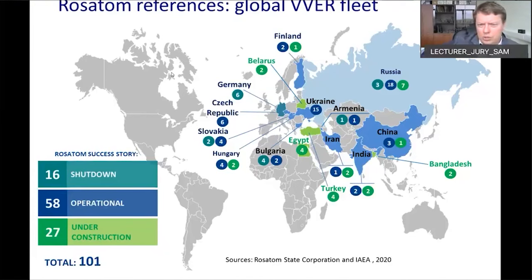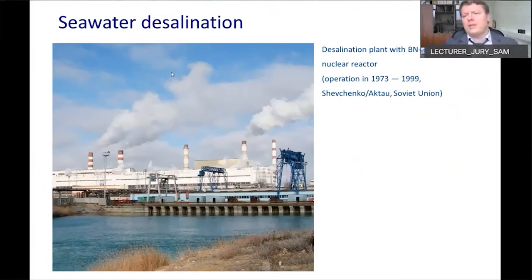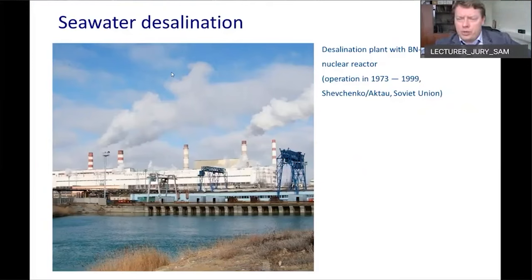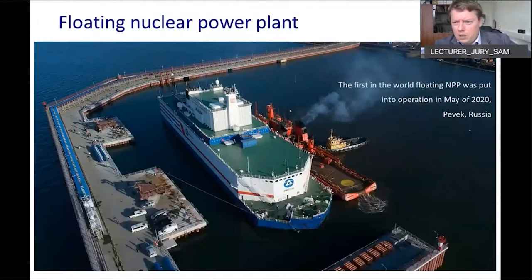One of our interesting nuclear power plants operated from 1973 to 1999 — the fast neutron reactor BN-350. It produced electricity and was used for transportation and water desalination. You have probably heard that Russia was the first country to start operation of a floating nuclear power plant.